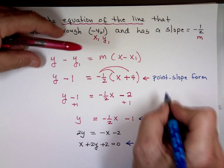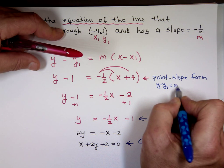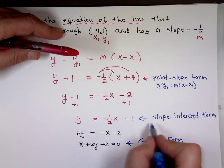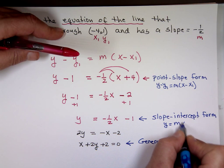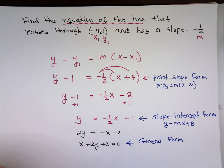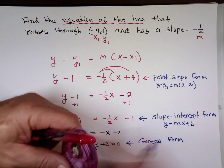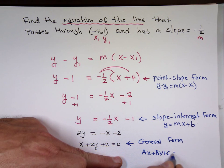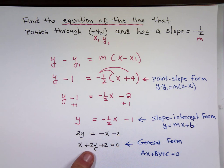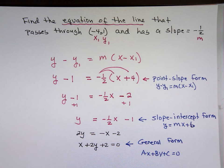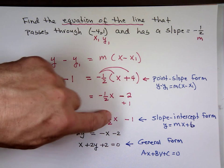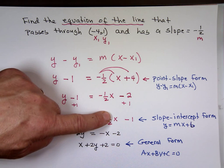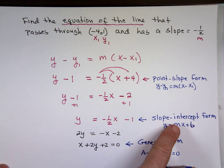So the point-slope form is y minus y sub 1 equals m times x minus x sub 1. The slope-intercept form is y equals mx plus b. The general form is ax plus by plus c equals 0. Make sure you know the three forms, because if they want one form and you give them another, they'll mark it wrong.